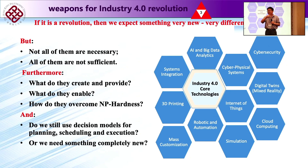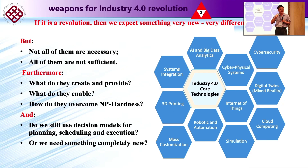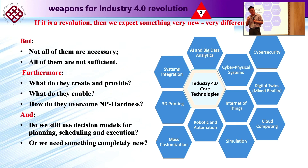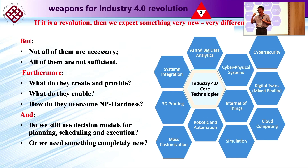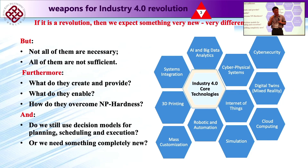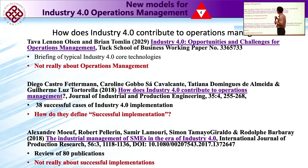As Professor Joe mentioned, we do not have consensus about Industry 4.0, but we do have one consensus: Industry 4.0 is a revolution. If it is a revolution and the revolution is successful, things must be different — at least one thing must be different from what we have learned from textbooks. I spent 15 years looking for one thing that could be different. For example, do we still use stochastic decision models for production planning, scheduling, and execution?